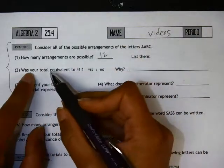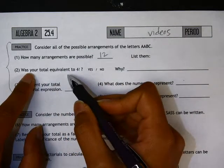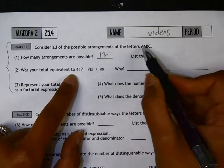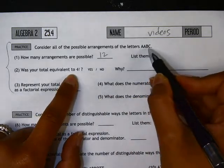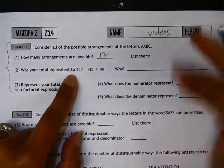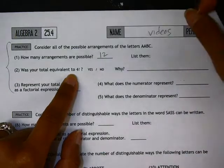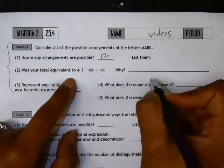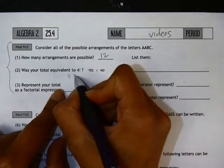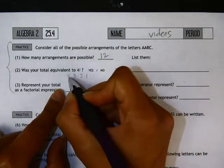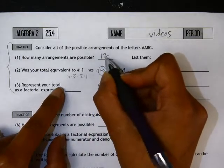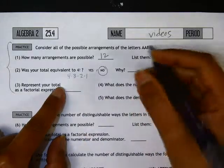So if you look at question two, the question is, what was your total equivalent to 4 factorial? We know here there were four things that needed to be arranged, and in previous problems when we were arranging things, we end up being able to do 4 times 3 times 2 times 1. If we were to try that on this problem, we get 24. So this total, the number of arrangements you got on number one, is not the same as 4 factorial.